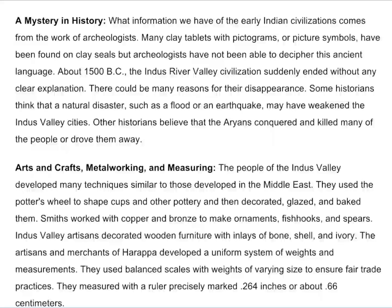A mystery in history. What information we have of the early Indian civilizations comes from the work of archaeologists. Many clay tablets with pictograms or picture symbols have been found on clay seals, but archaeologists have not been able to decipher this ancient language. About 1500 BC, the Indus River Valley civilization suddenly ended without any clear explanation. There could be many reasons for their disappearance. Some historians think that a natural disaster, such as a flood or an earthquake, may have weakened the Indus Valley cities. Other historians believe that the Aryans conquered and killed many of the people or drove them away.